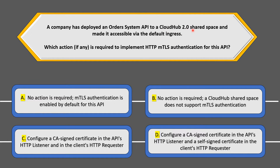One thing to note here is that this question talks about CloudHub 2.0. In CloudHub 1.0, we used the terms shared load balancer and dedicated load balancer, but those terminologies have been replaced by shared space and private space in CloudHub 2.0, while most features remain the same. The system API is deployed in the shared space, which uses the shared load balancer.